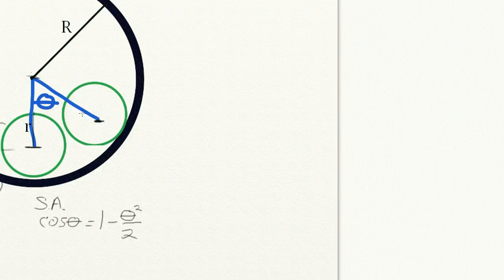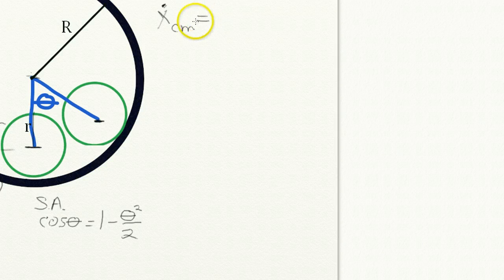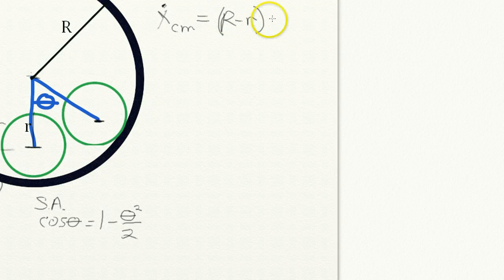Let's define a few variables. What we need to know is the velocity of the center of mass, x-dot CM. We're going to express it in terms of theta. It's simply this radius — big R minus little r — times the rate at which that angle is changing, theta-dot. So we've got the center of mass velocity.